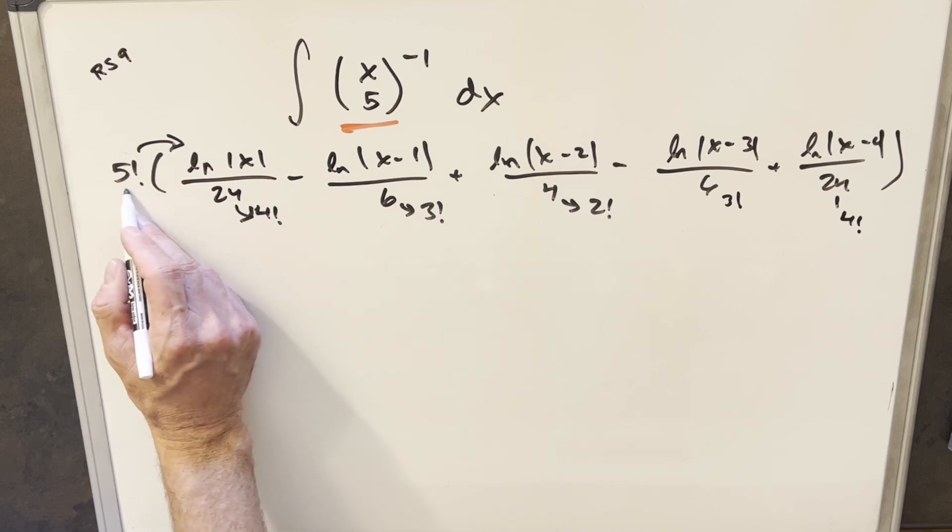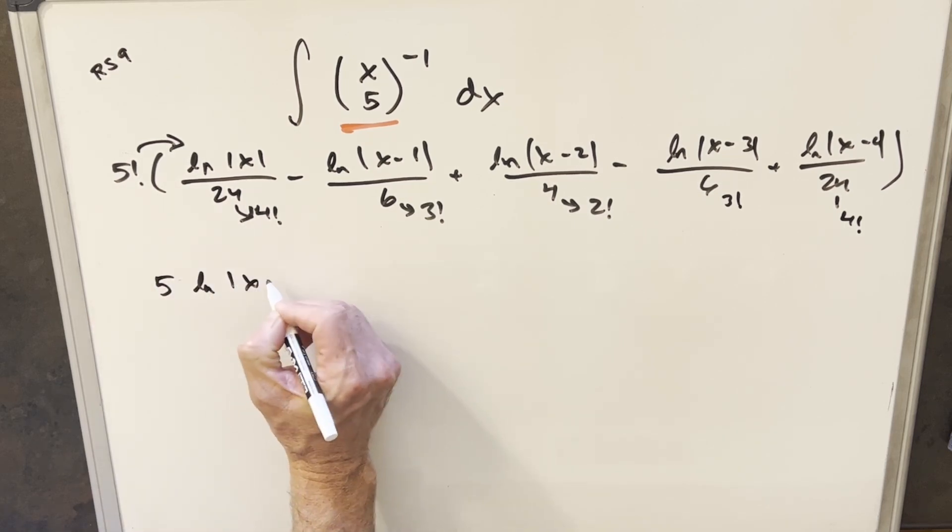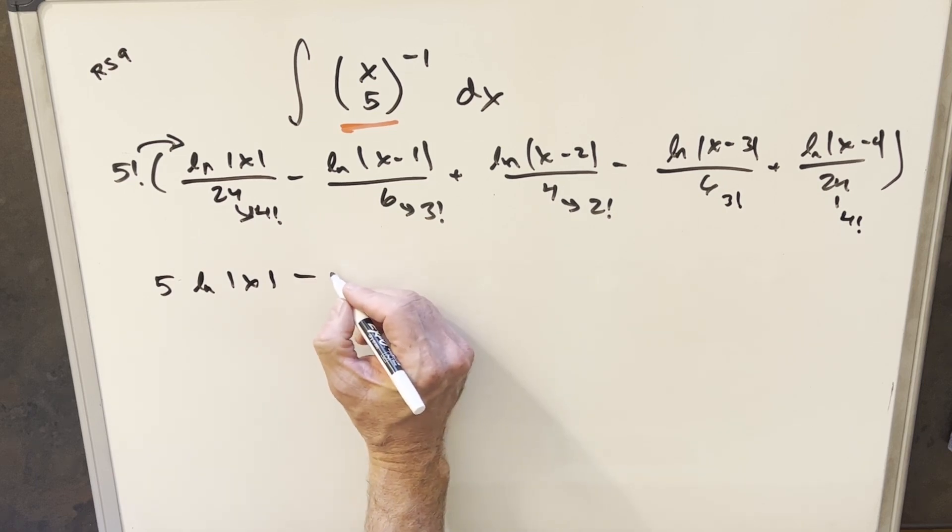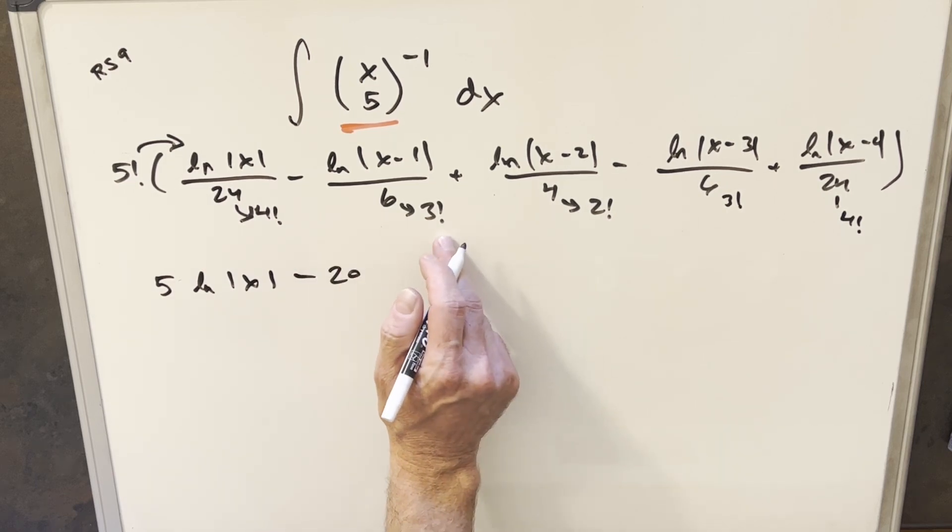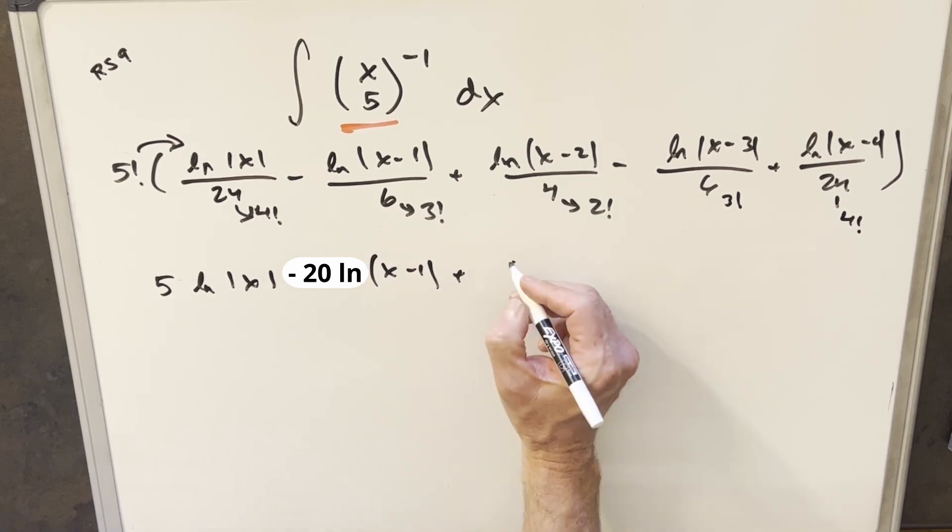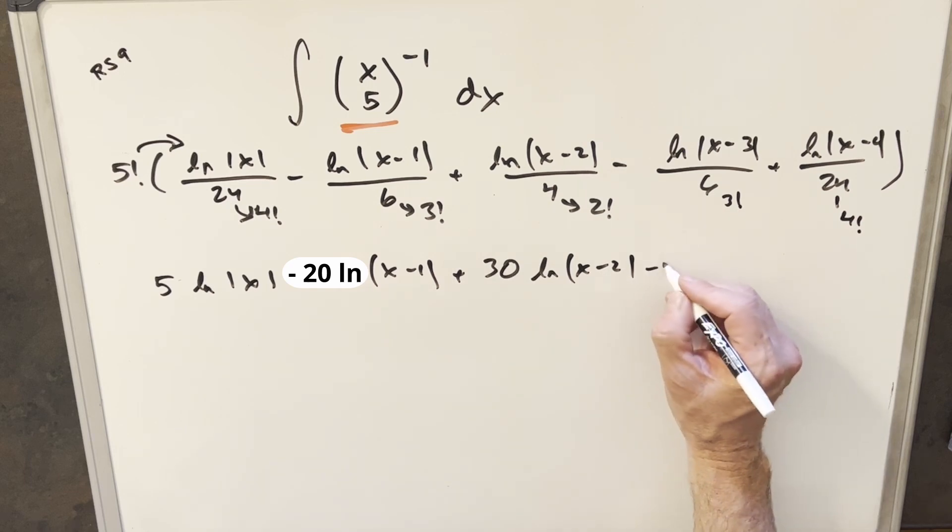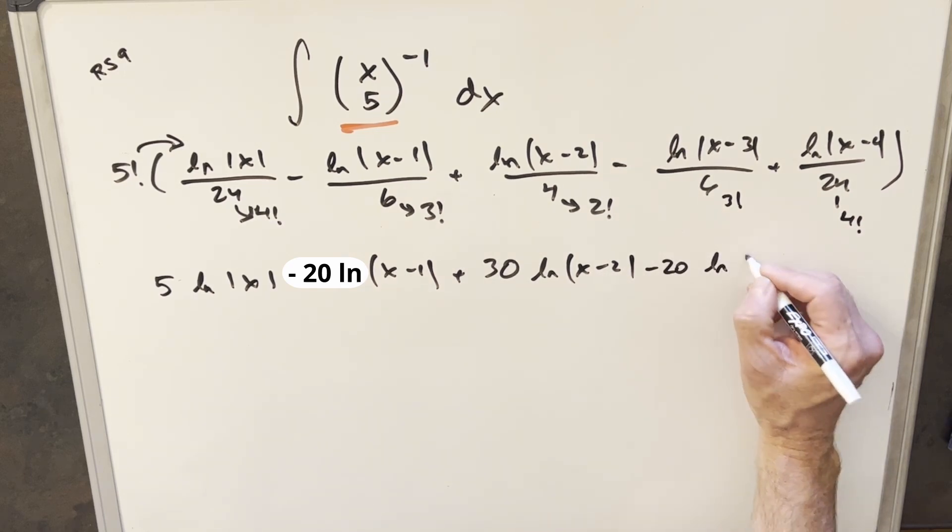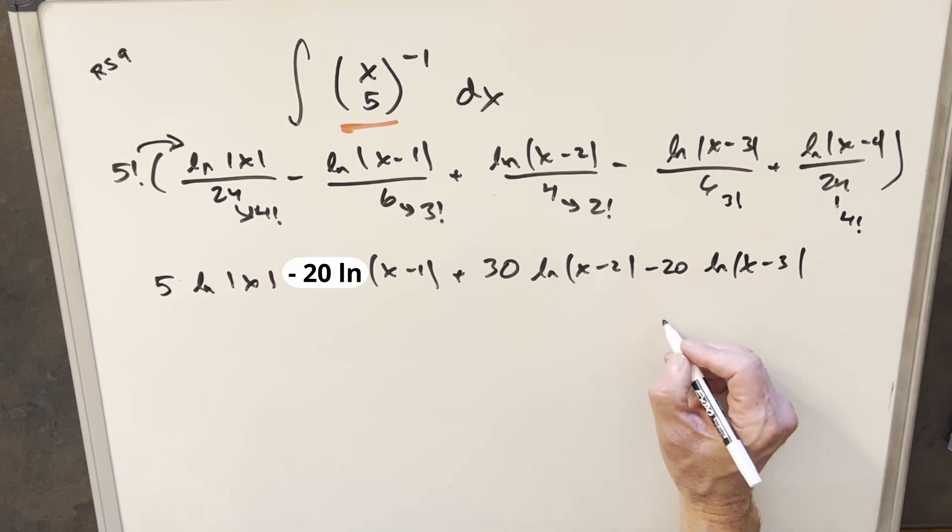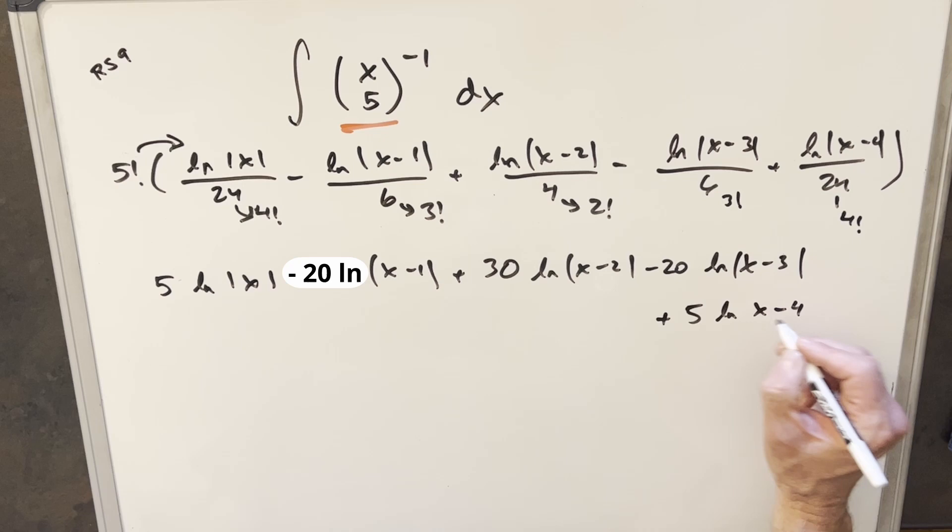Okay, so just multiplying this in now, we have 5 factorial over 4 factorial. It's just going to give me a 5 up front with the natural log. And then this one's going to have a 20 in front. And we divide 3 factorial into 5 factorial. And then this one's going to become a 30. And then these two are going to be the same as these. So we're just going to have minus 20 natural log x minus 3. Somehow I ran out of space.